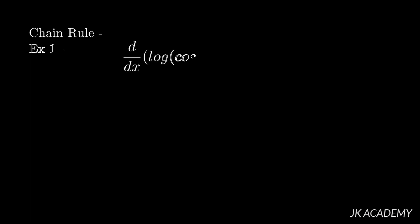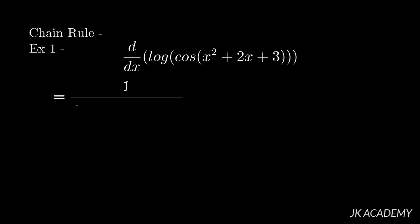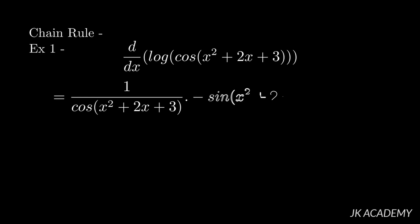The next set is a rule called the chain rule. Let's take an example to understand it better: d by dx of log of cos of (x squared plus 2x plus 3). First layer — we see log. Log differentiation is 1 by x, so in place of x there is cos(x squared plus 2x plus 3). Now we have differentiated log. Next we go to cos — cos differentiation is minus sin, in place of x there is x squared plus 2x plus 3.